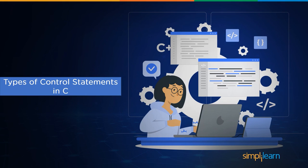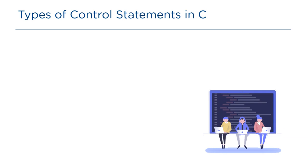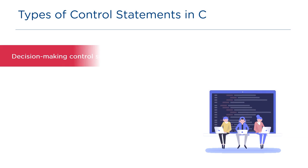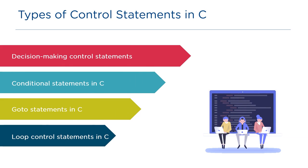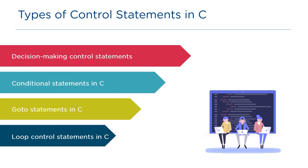Now let us understand the classification of control statements in C. First up we have decision making control statements, then we have conditional statements, and finally goto statements and loop control statements.